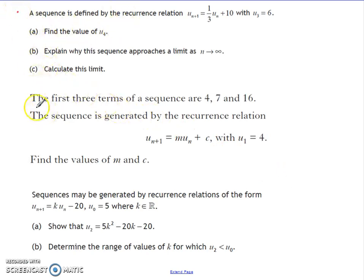I've got three questions here. The first one is all about a sequence being defined, calculating a term, explaining why it has a limit and calculating it. The second one looks at several consecutive terms and being able to calculate the recurrence relation from them. The third one is looking at a range of values which can occur within the sequence itself. The first two are non-calculator, this last one is calculator. Pause the video, have a go at them, and then come back and I'll work through the answers.